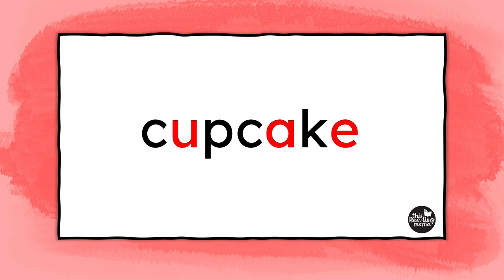Like all the other words we've studied so far, we first want to ask our learners to find the vowels in the word. Circle or label them — I'm going to use a V for vowel. As we see here, we have three vowels, not two. So next we want to ask our learners: does it have a silent E on the end of the word? And if the answer is yes, we want to teach our learners to just lightly slash through it so they can remember we're not going to pay attention to that E just yet.